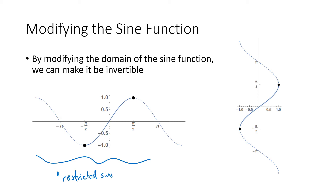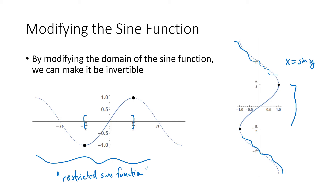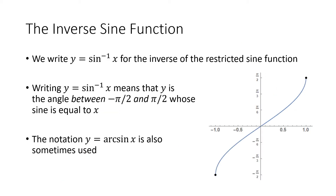This graph is what we call the restricted sine function — the same old sine function but with a changed domain. We make the domain go only from negative pi over 2 to pi over 2. When we do that and reverse x and y, so we have x equals sine of y with that modified domain, the extra portions of the graph are removed and this much is a function. That function is what we call the inverse sine function.